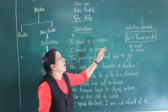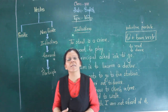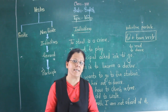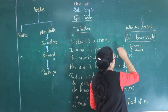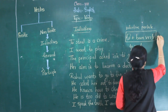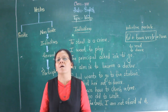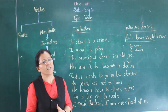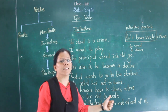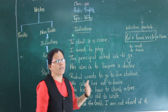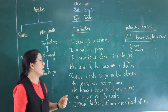How does an infinitive function in a sentence? It functions as a noun. Wherever there is an infinitive, it can be replaced with a noun. Infinitive functions as a noun. Now, what are the functions of a noun? Let us see with the help of examples.